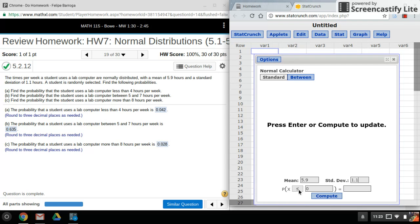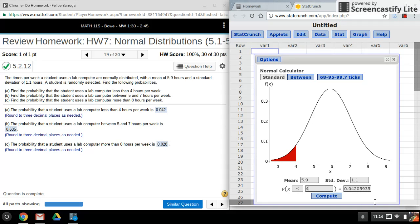So I'll make sure this is less than, I'll enter, and there's my area slash probability.